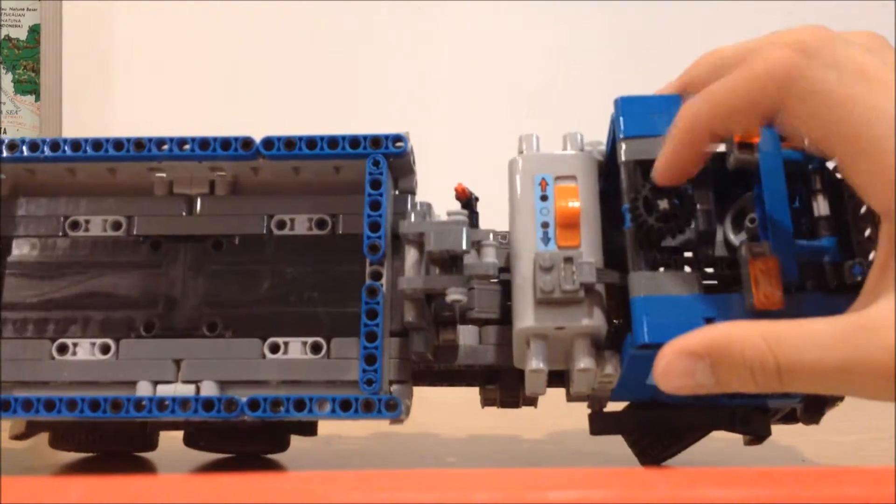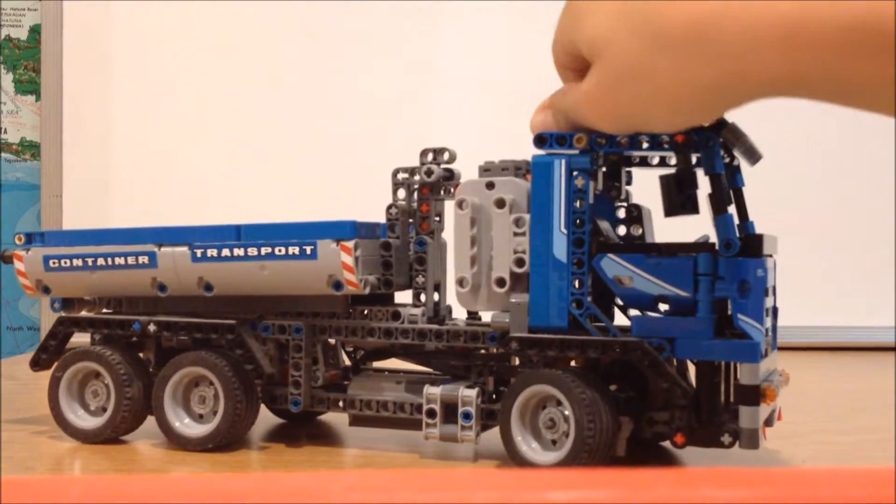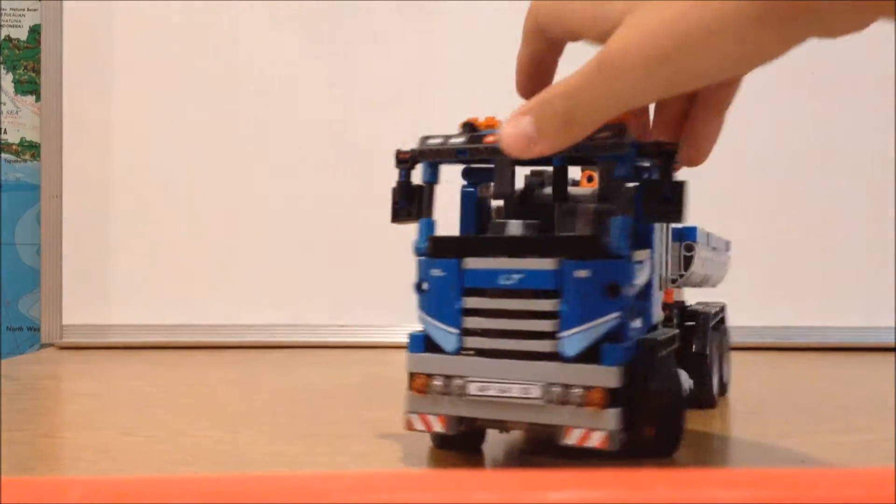And up at the top here you have a Technic circle that you can twist to move to the left and to the right and to the left again. That's the front end.